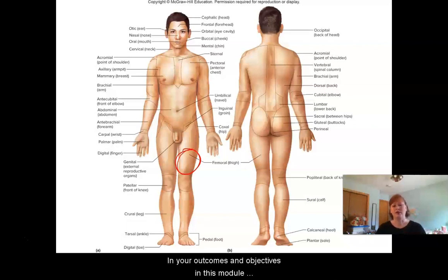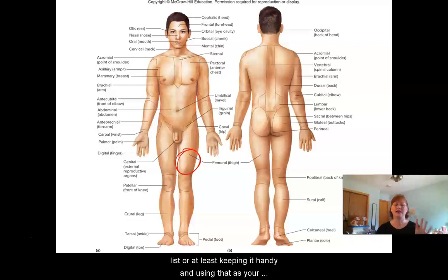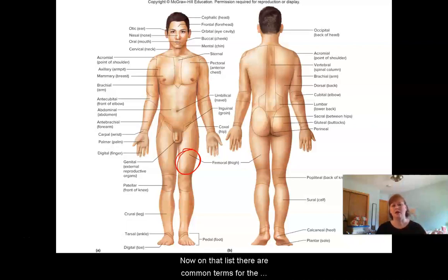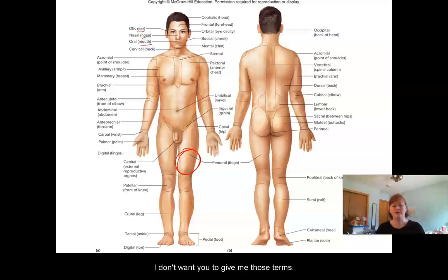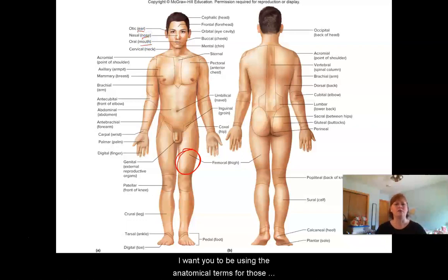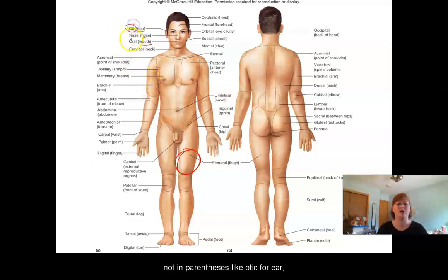In your outcomes and objectives in this module you'll see a list, and I would recommend printing off that list or at least keeping it handy and using that as your reference point. On that list there are common terms for the different regions. For example, if you notice in parentheses we have ear, nose, mouth, and so on. I don't want you to give me those terms — I want you to use the anatomical terms, like otic for ear, nasal for nose, and so on.